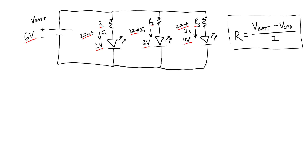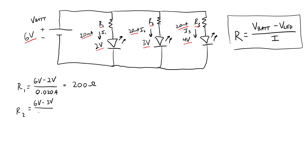We apply this equation to each branch of the circuit separately. For R1, the red LED: R equals the battery voltage minus the LED voltage of two volts, divided by the desired current of 20 milliamps (0.02 amps). That gives us a 200 ohm resistor. For R2: battery voltage minus the LED voltage, divided by 0.02 amps, gives us a 150 ohm resistor. Finally, R3 for the blue LED: six volts minus four volts, divided by the current, gives us a 100 ohm resistor. We wind up with different resistor values because of those different voltage drops.